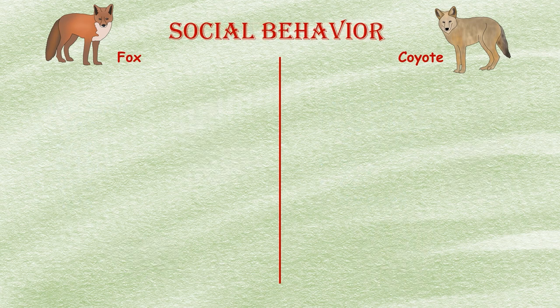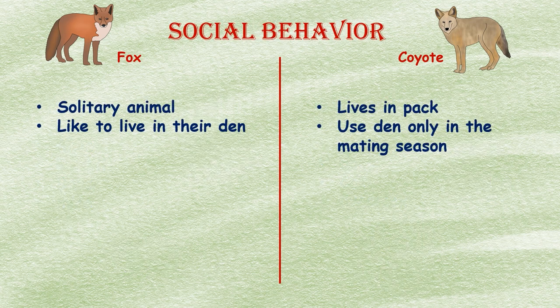The fox is a solitary animal that likes to live in a burrow or den and often shares its zone with immediate family members only. Coyotes live in packs with other family members and sometimes with non-family members as well. Coyotes sleep on the ground and use the den only during the mating season.